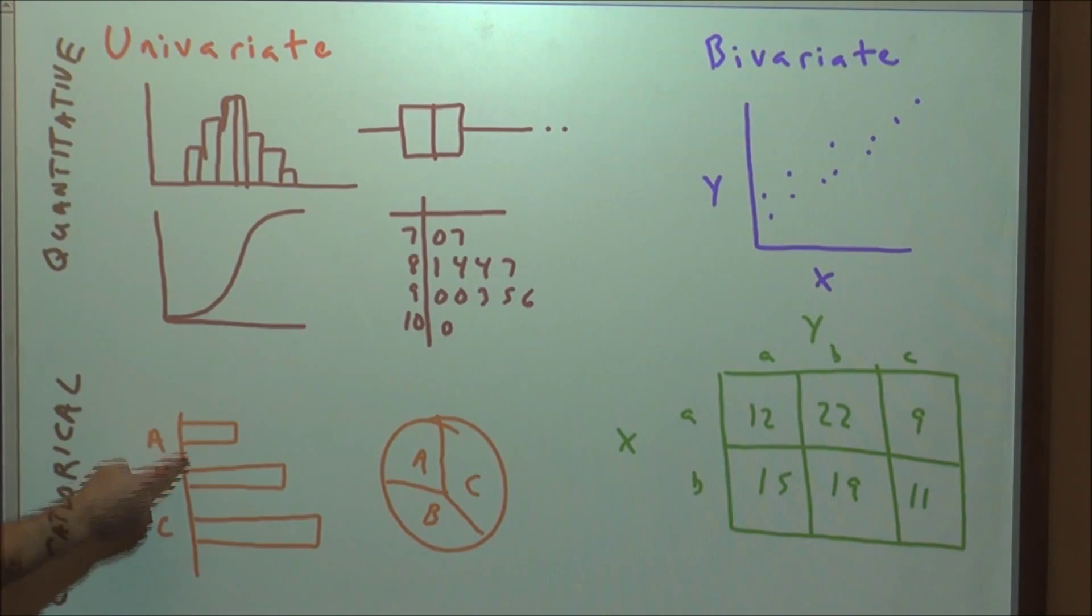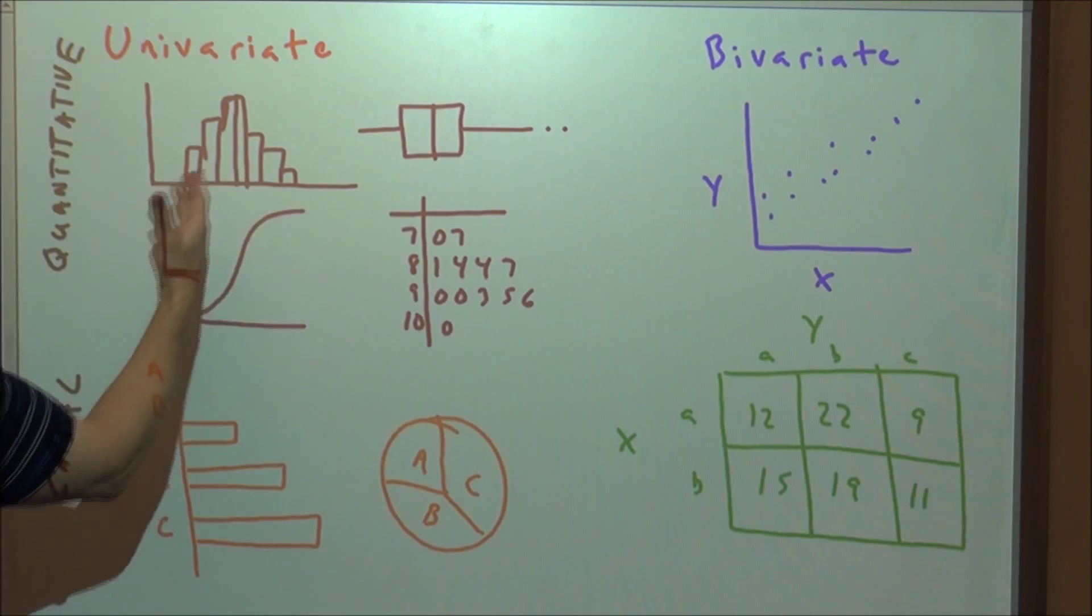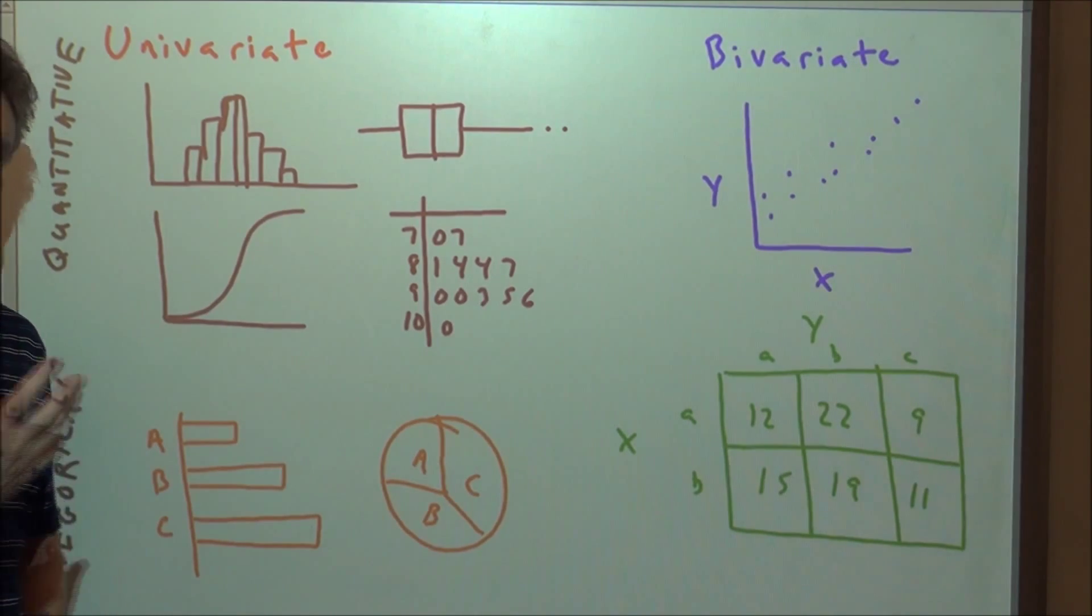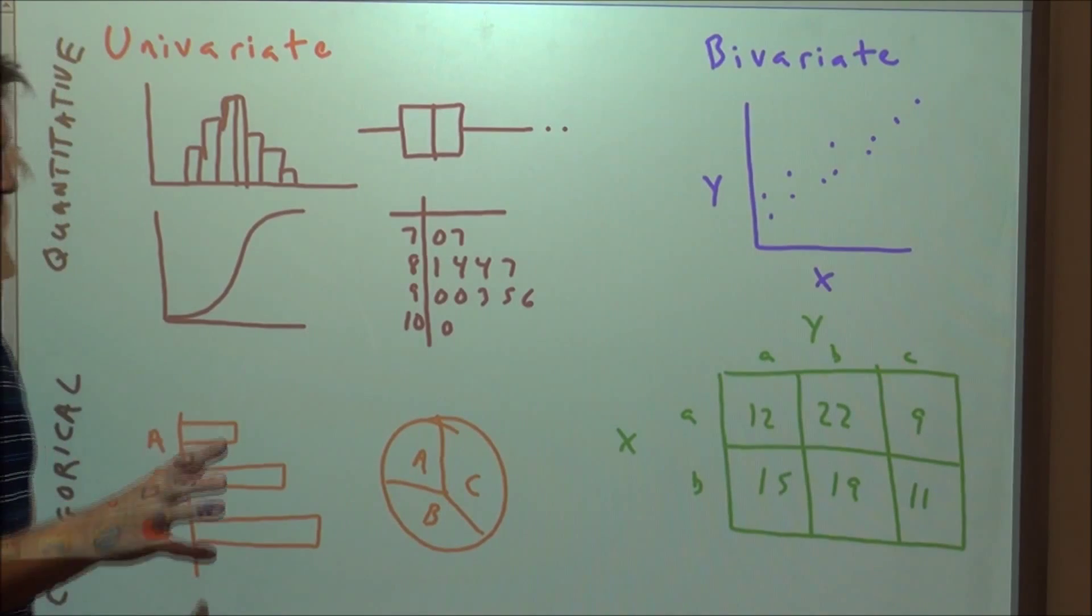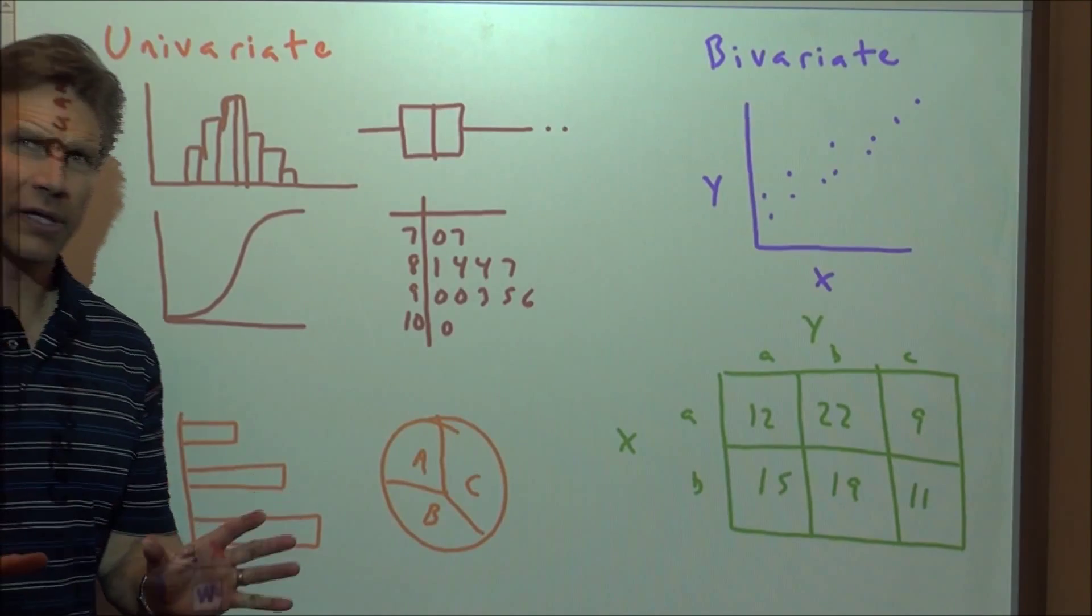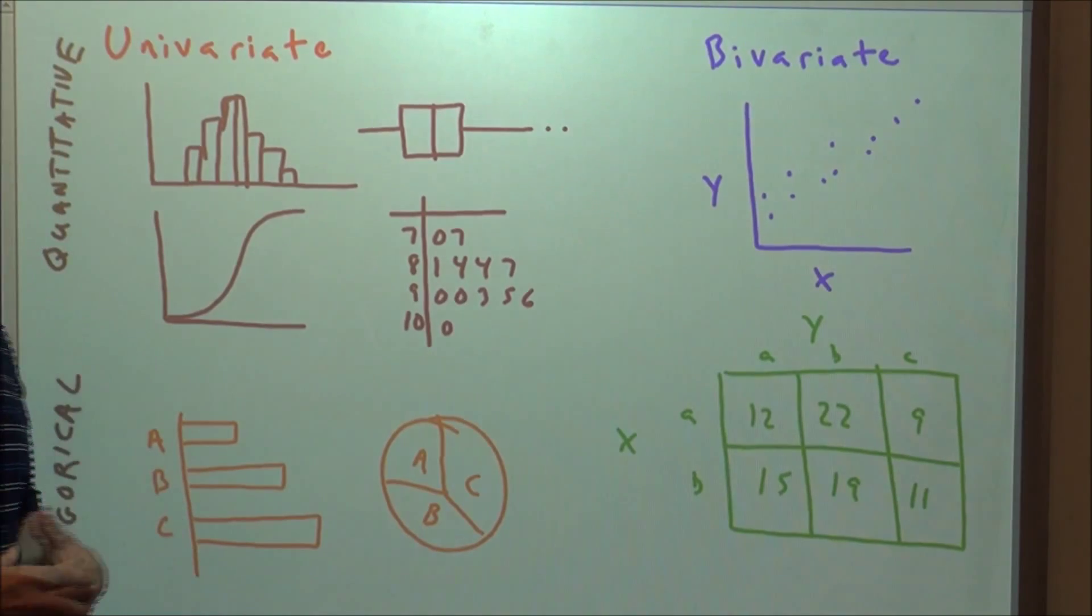A lot of people say, what's the difference between a bar graph and a histogram? Typically, histograms are with quantitative variables and bar graphs are with categorical variables. We'll talk more about that later. Now, this is univariate data, and this is all we're going to deal with in this first unit in stat.